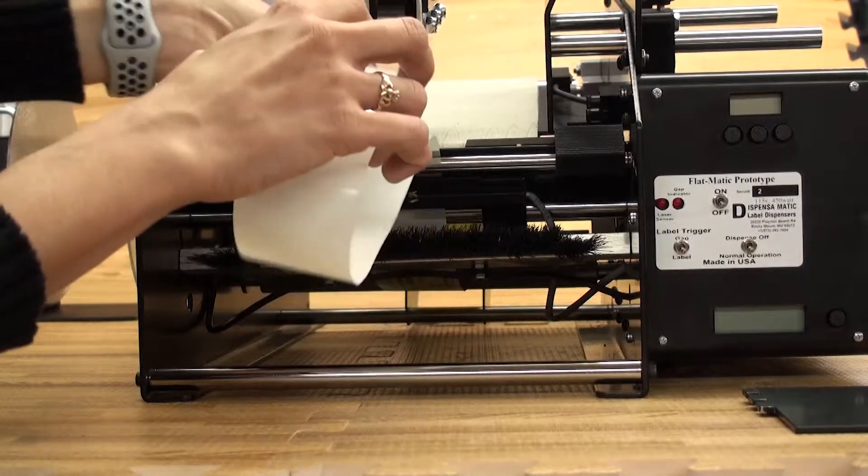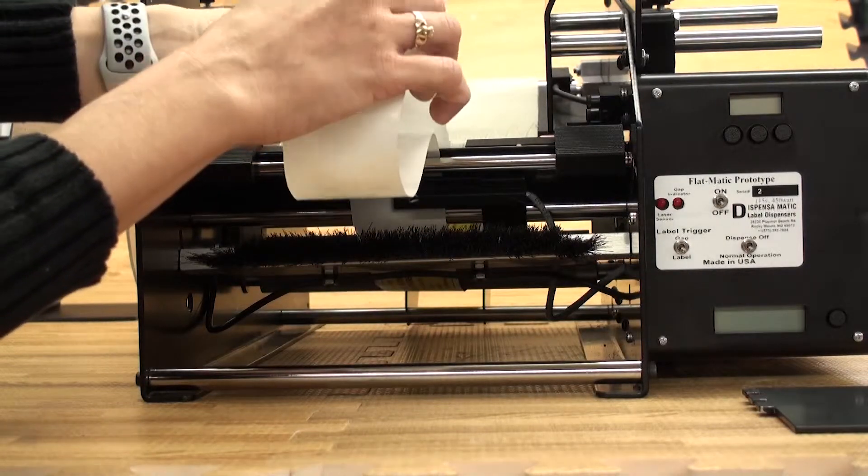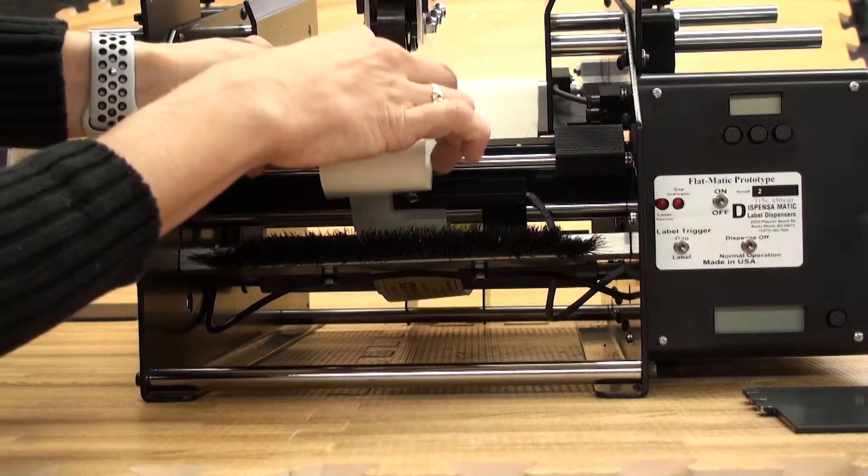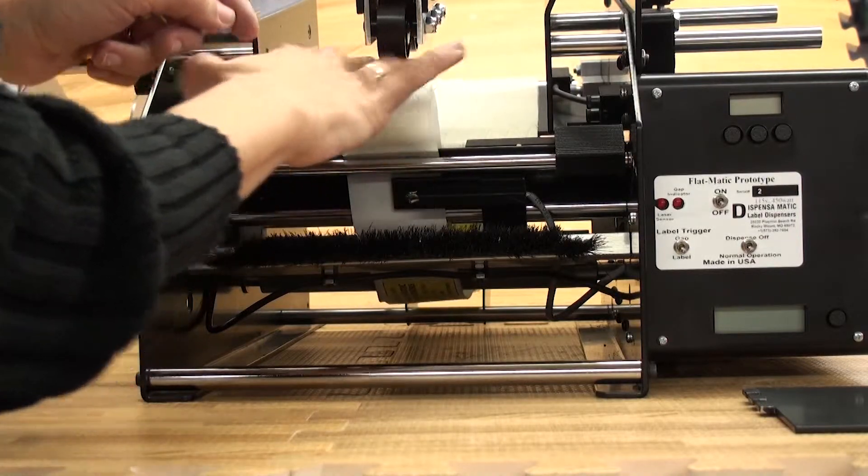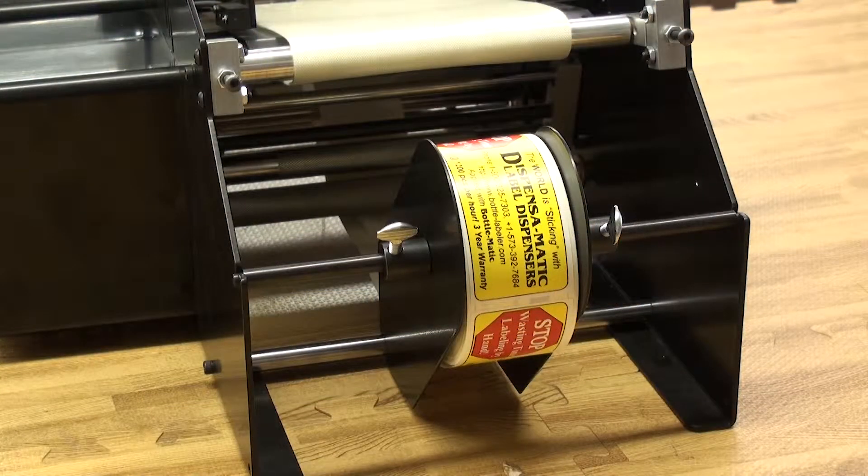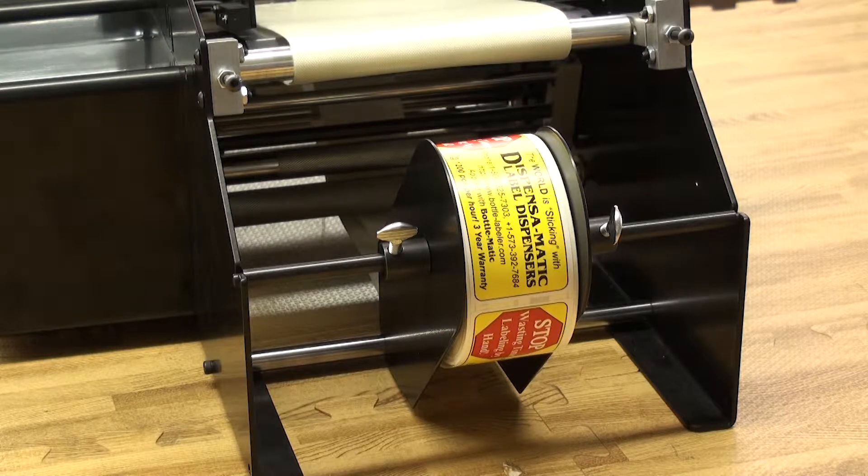Your labels will then feed directly around the dispensing table and go back down under the belt. Once you have your labels going back under the belt, you are going to grasp them from the back side of the machine.